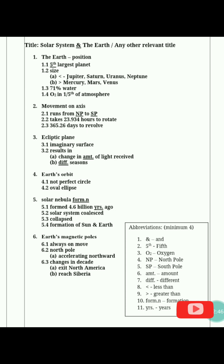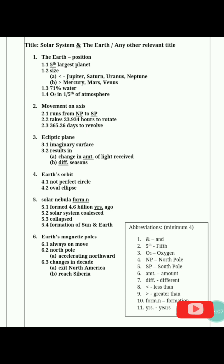The third heading is 'Ecliptic Plane.' Sub-heading 3.1: imaginary surface. Sub-heading 3.2: results in — we can go to sub-sub-headings here: A) change in amount (amt.) of light received — we abbreviated 'amount' as 'amt.' and underlined it. B) different seasons — 'different' can be abbreviated as 'diff.' Some people write it as 'diff.' with a dot. These are also underlined. We have now made 5 abbreviations, while only 4 are required as minimum.